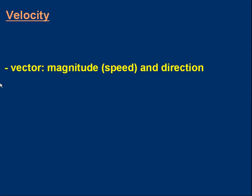Velocity, as I hope you already know, is a vector. What that means is it's got a magnitude, a size, which in this case is the speed, and it's got a direction. So for example you can have a velocity of five metres per second to the east. The five metres per second part is the speed and the direction is to the east. That set of information, the speed and the direction, is the velocity.